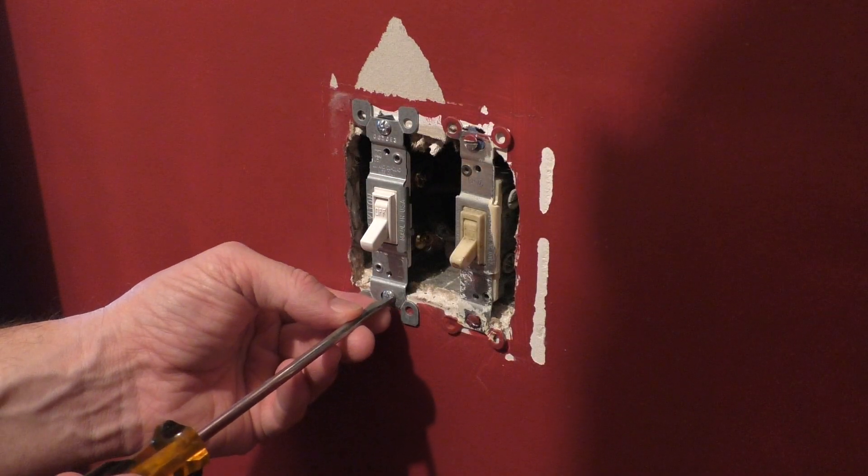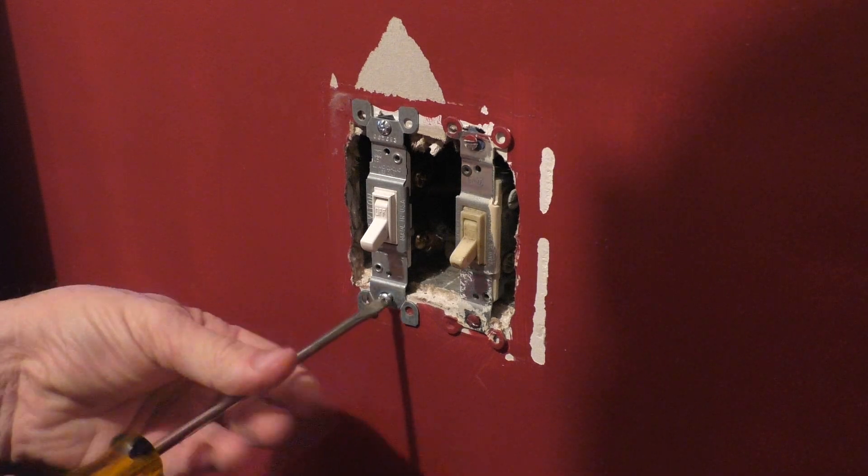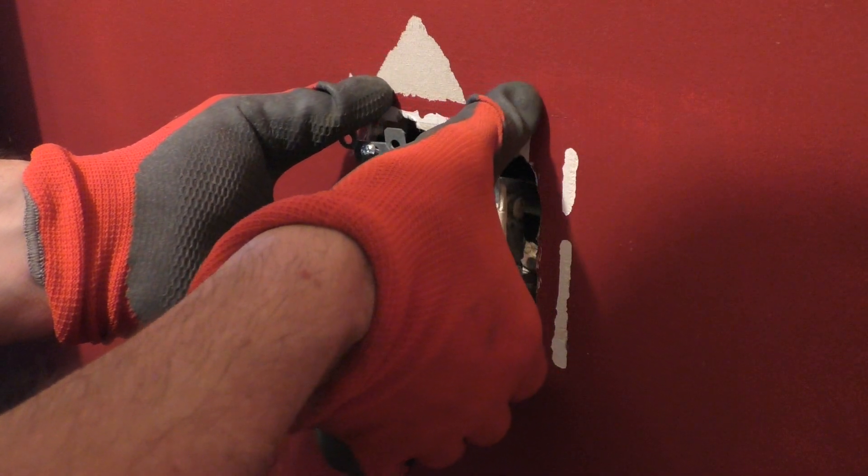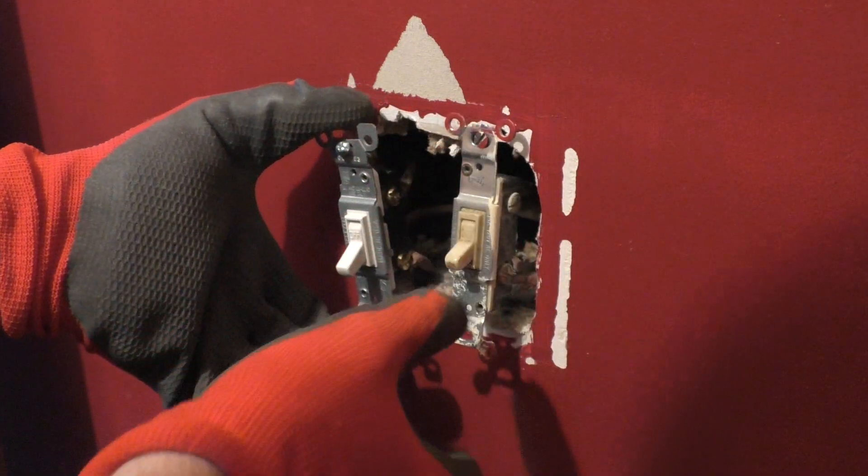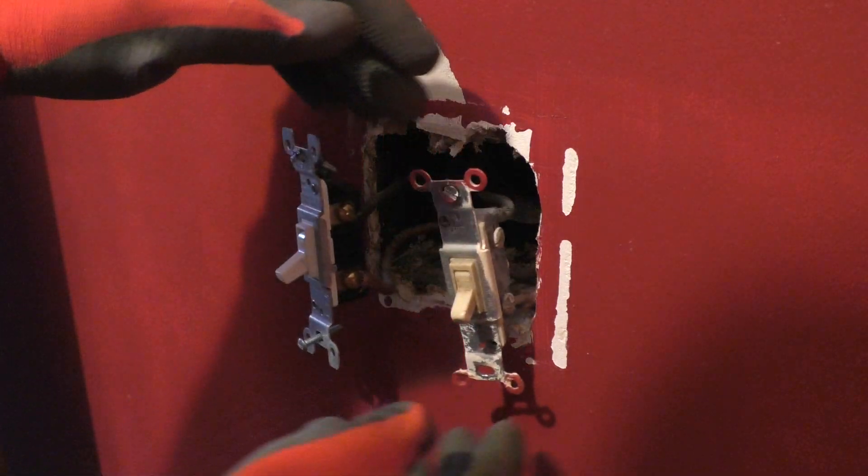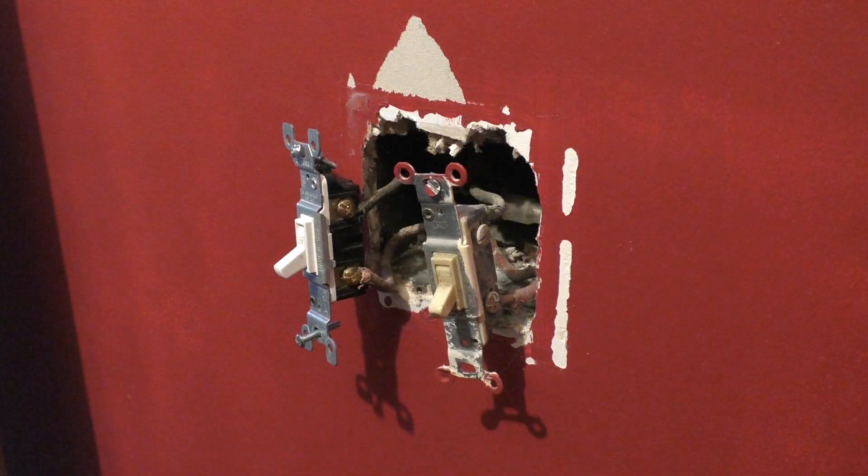Then you want to remove the screws that connect the light switch or receptacle to the electrical box. Carefully pull out the light switches as far as you can. This may depend on how much wire is left in the box, but always treat the wires as hot for safety, even though you should have already turned the power off at the breaker box.